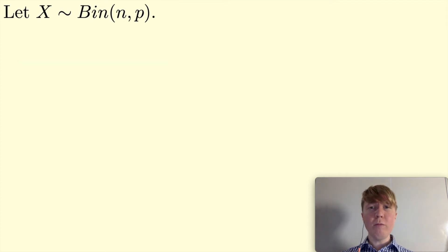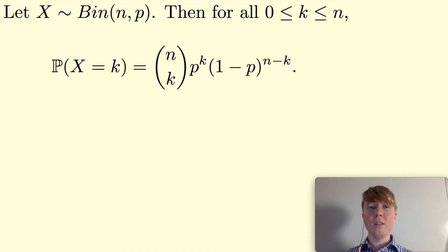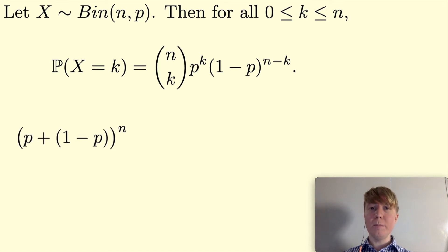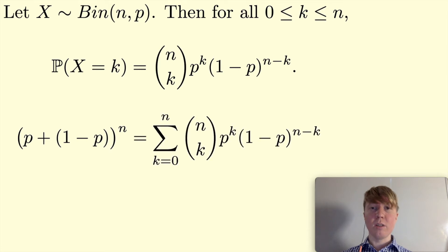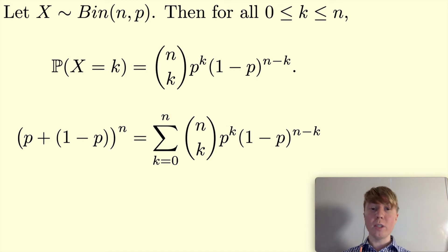The general picture: if you have a binomial distribution with n trials and probability p of success, the probability mass function is n choose k, times p to the k, times (1-p) to the n minus k. Comparing this with (p + (1-p)) all to the power n, the binomial expansion is the sum from k equals 0 to n of n choose k times p to the k times (1-p) to the n minus k — all terms are exactly the binomial probabilities.